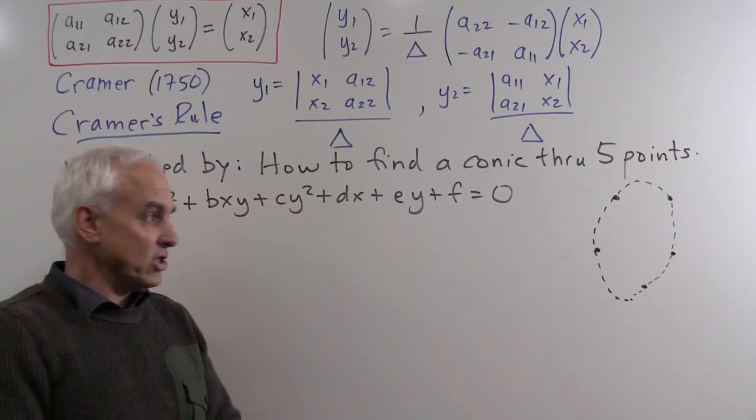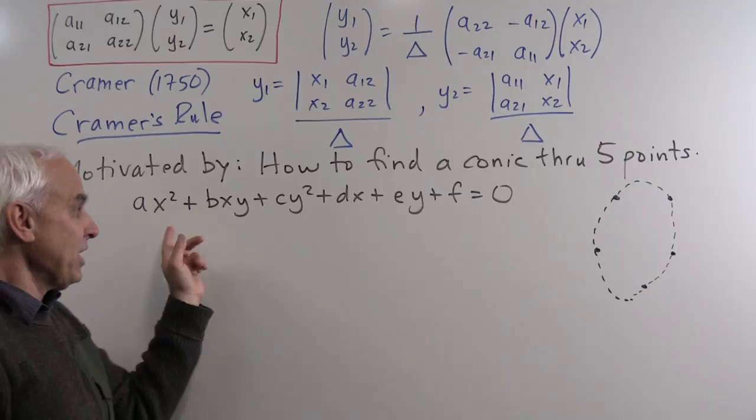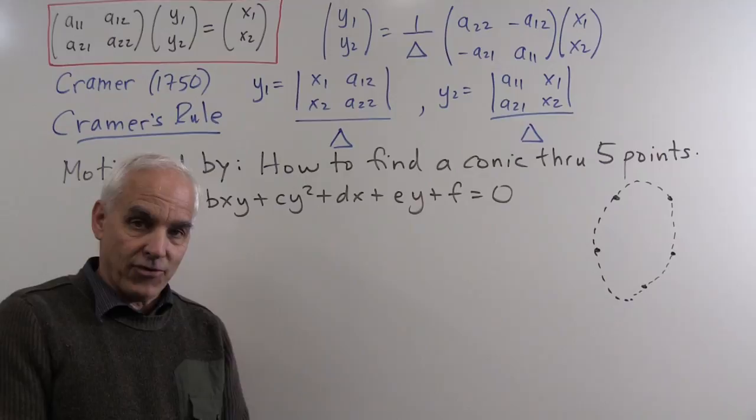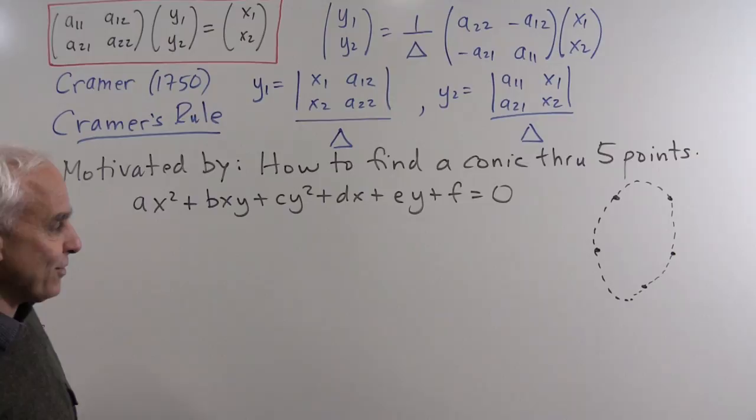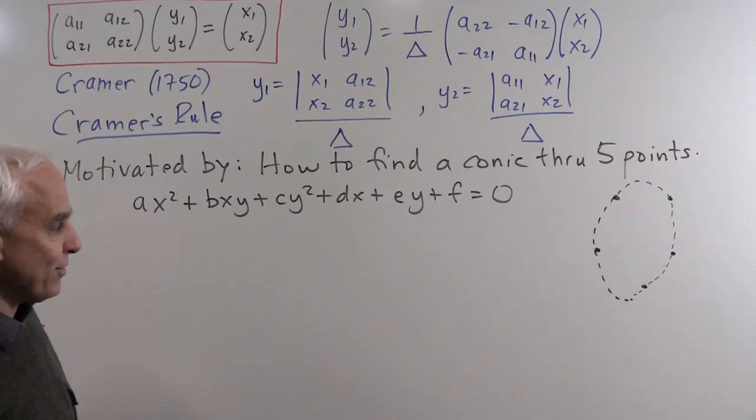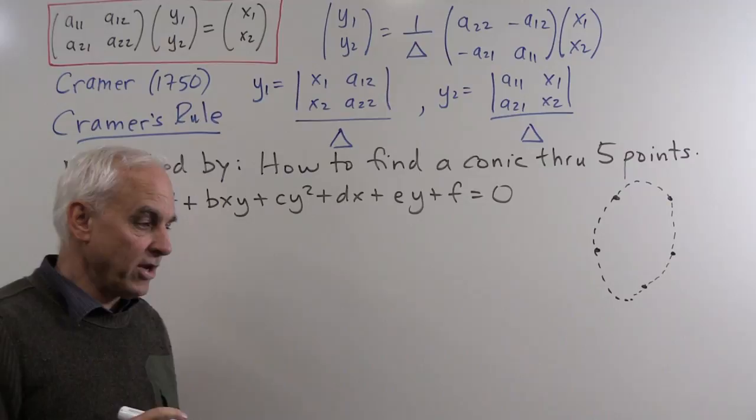If we multiply all the coefficients by a number, the conic doesn't change, so there are really only five degrees of freedom. With five points, we can substitute each one into the equation and get five equations in essentially five unknowns. This is a very familiar problem solved by many generations of geometry students, but there is a more elegant way of solving it.